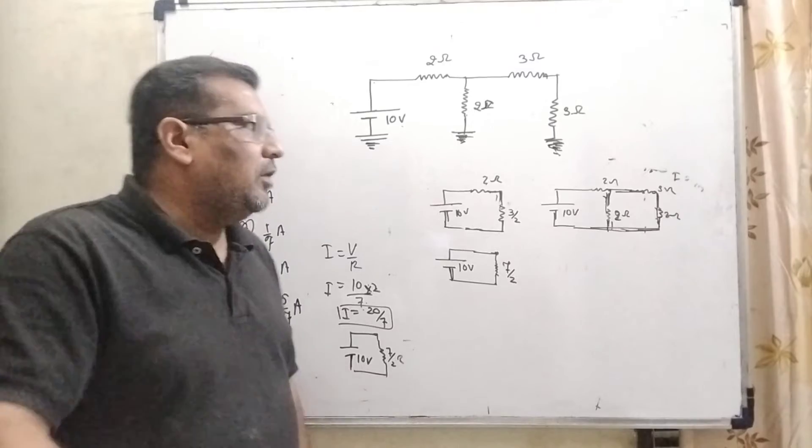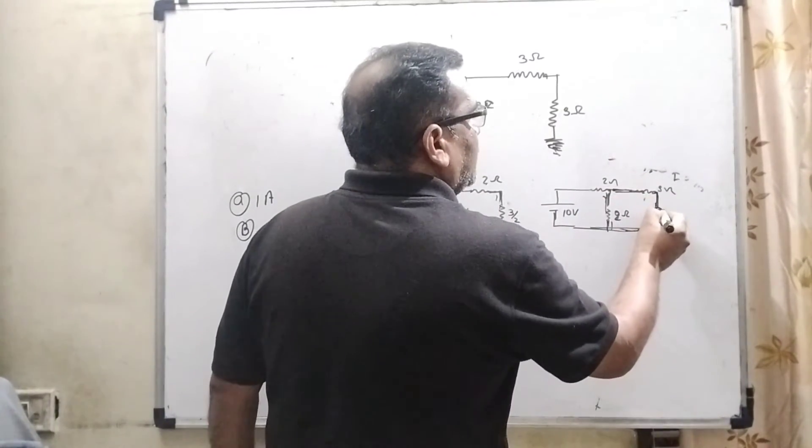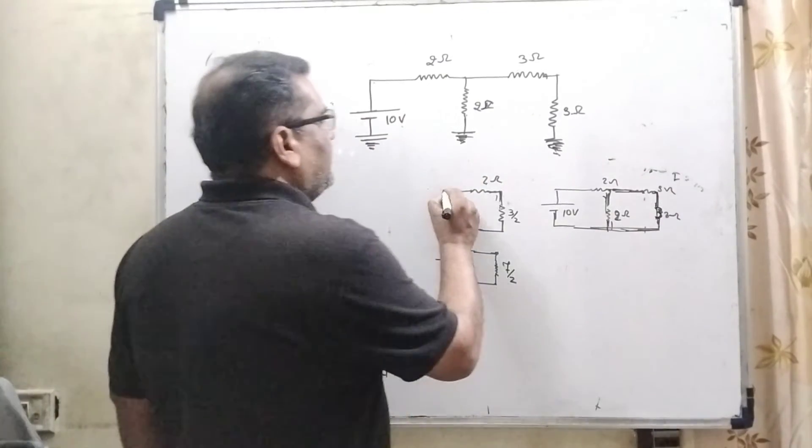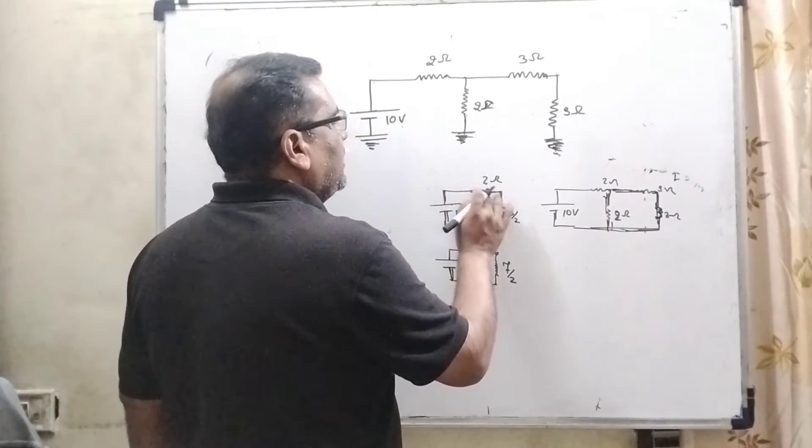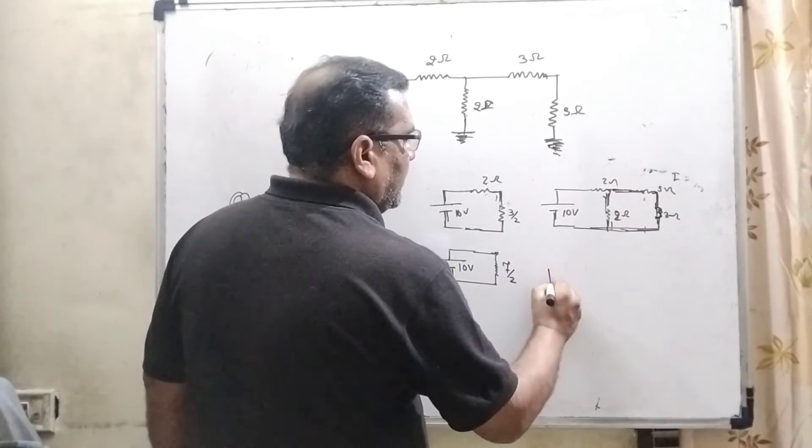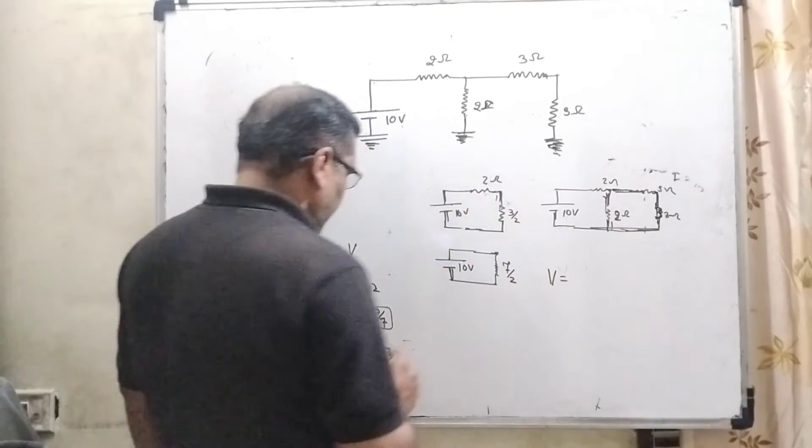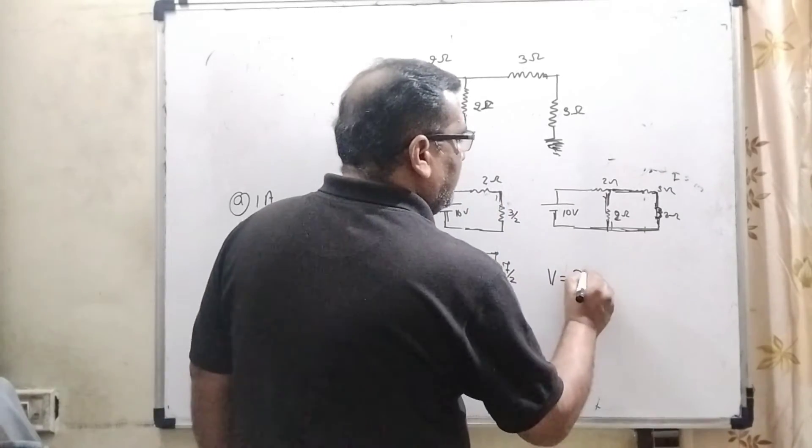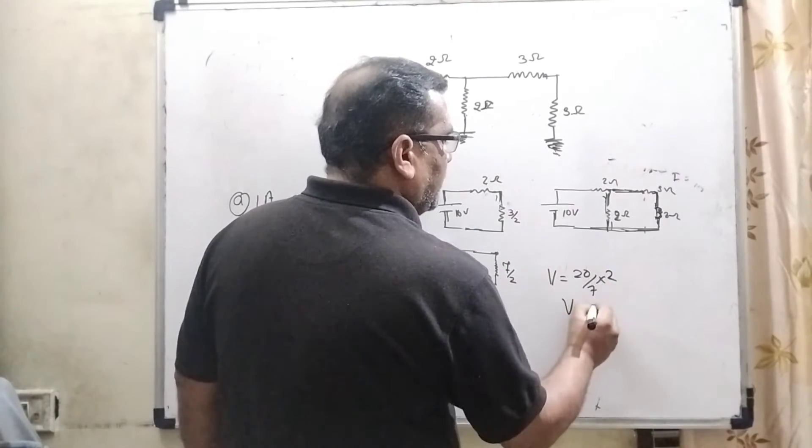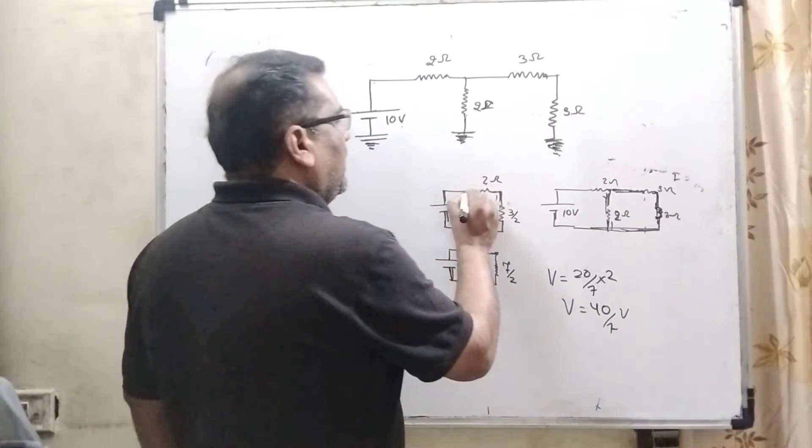Now, what we have calculated? We have to calculate the current passing through 3 ohm. So here, let us first calculate the potential at 2 ohm resistance. So here, V equal to, what is current, net current? 20 by 7. And what is the resistance? That is 2. So here, 20 into 40 by 7 volt.